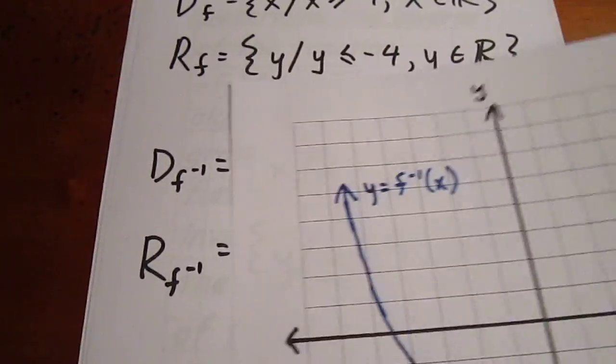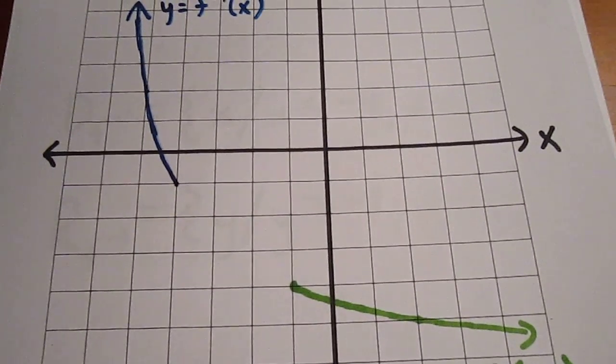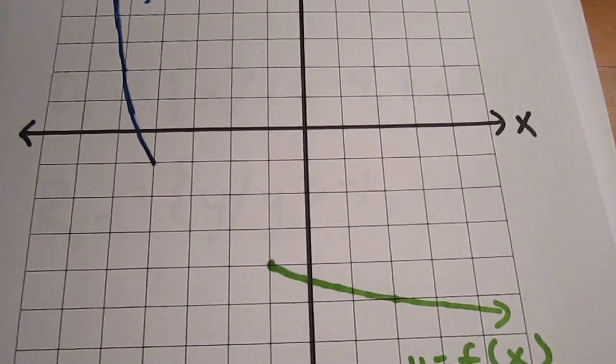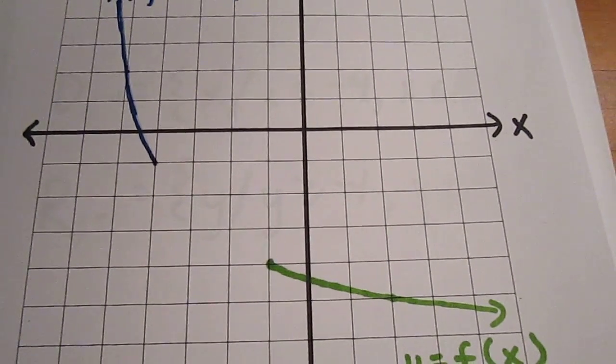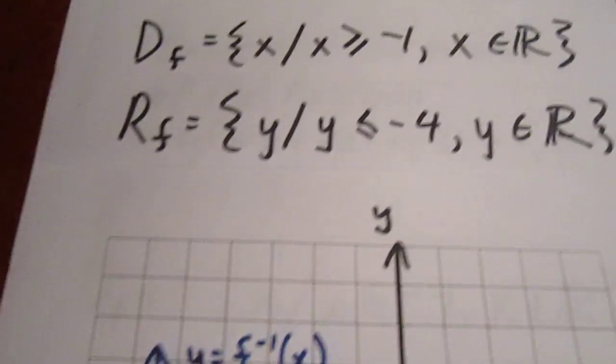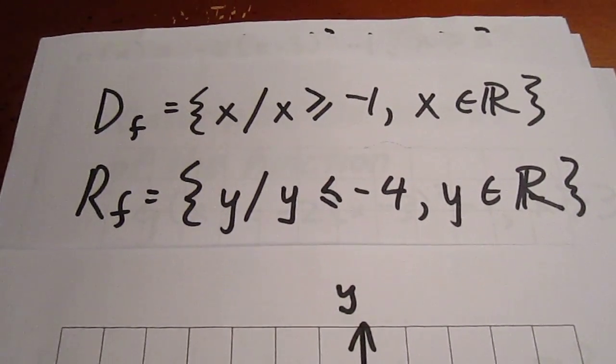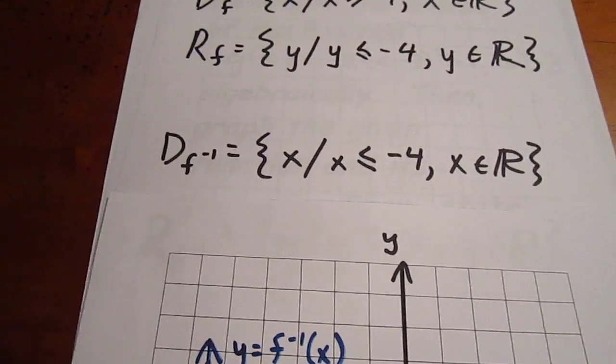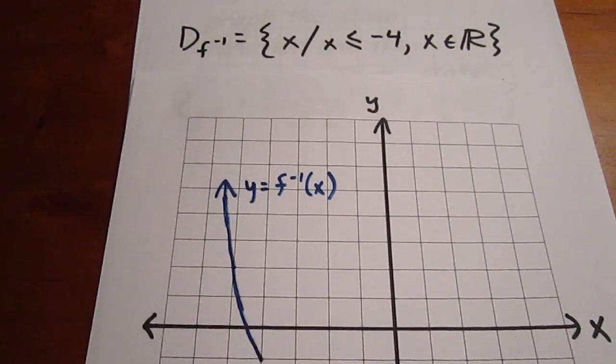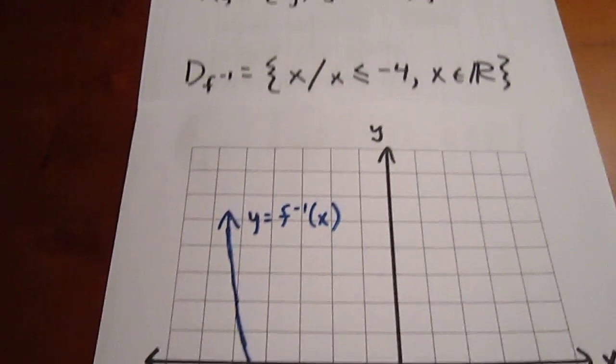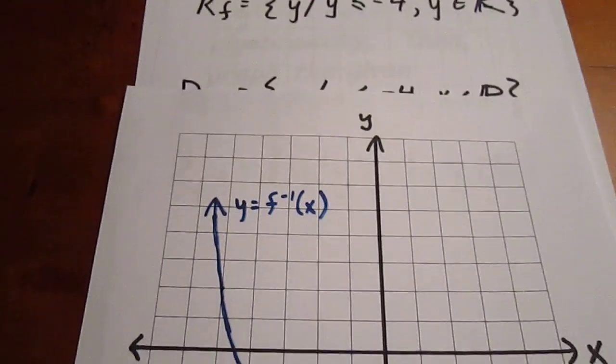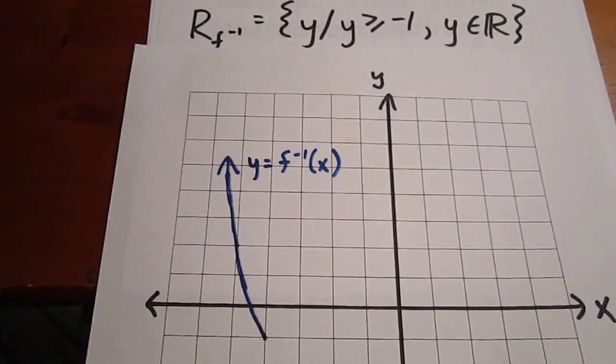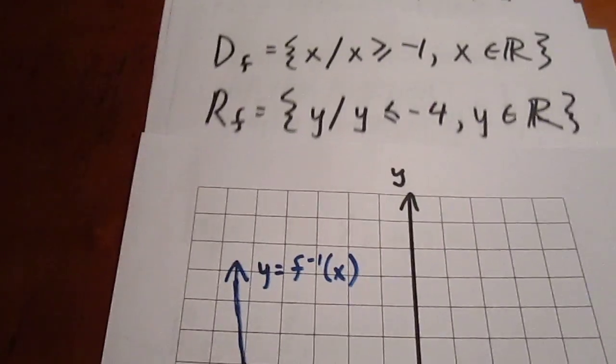Our domain of our green curve is the set of all x such that x is greater than or equal to negative 1, and the range is the set of all y such that y is less than or equal to negative 4. And our domain and range of the blue curve should correspond precisely with that. The domain of the inverse will be x less than or equal to negative 4, corresponding precisely with the range of the original. And the range of the blue curve will be y greater than or equal to negative 1, corresponding precisely with the domain of the original.